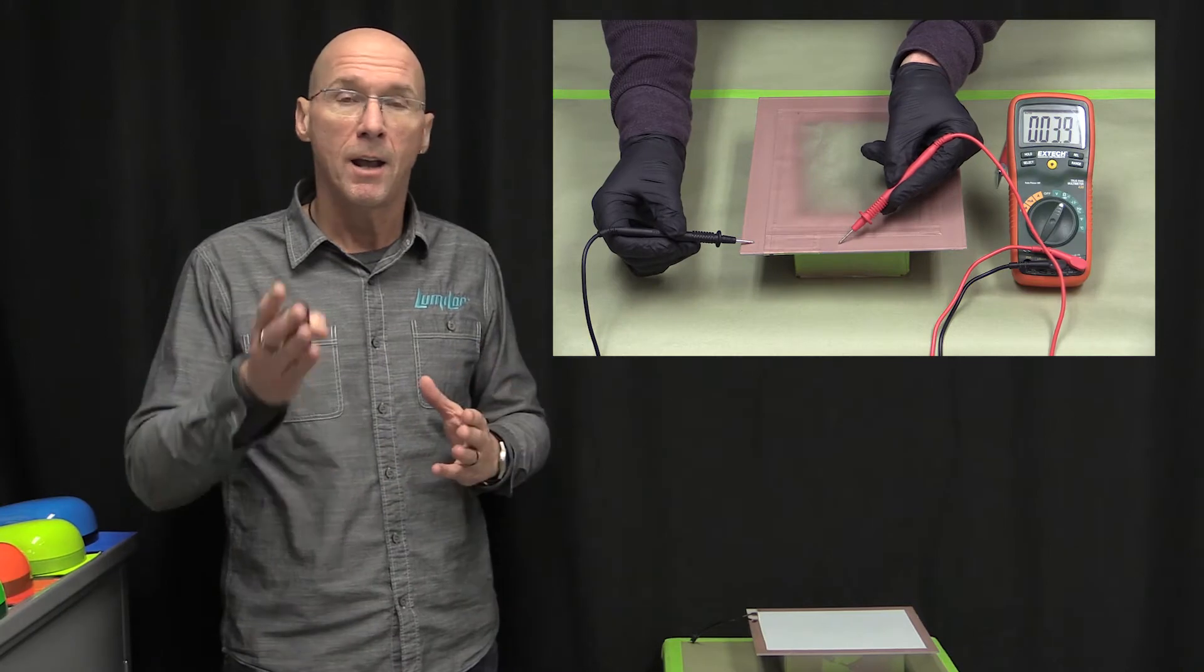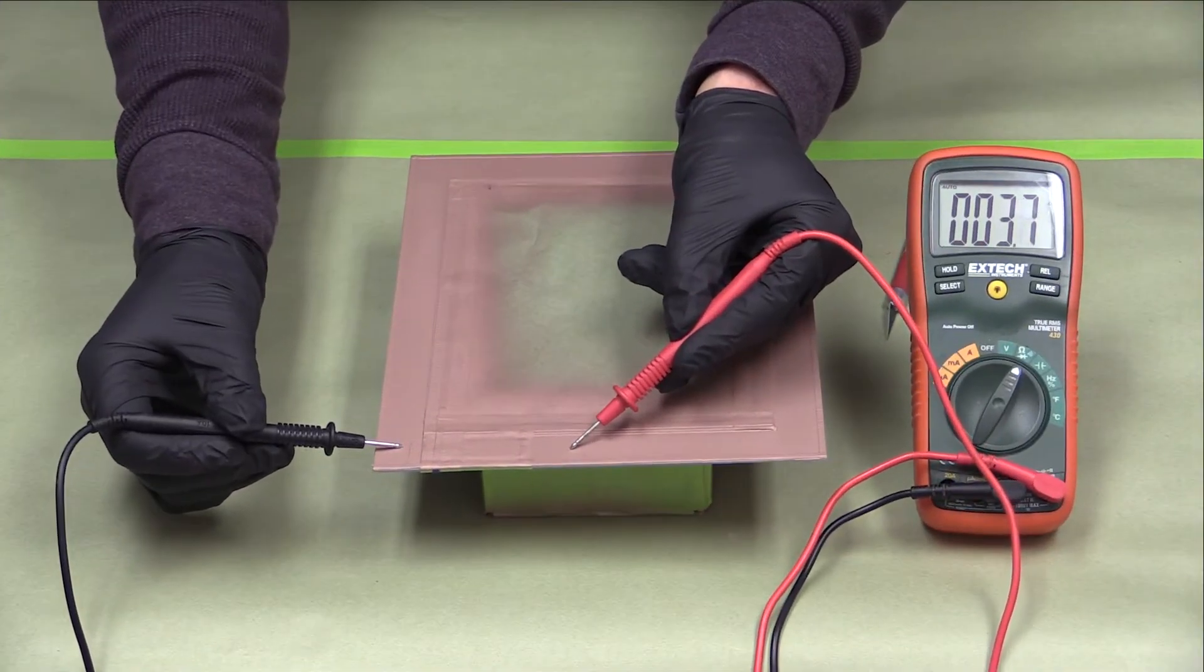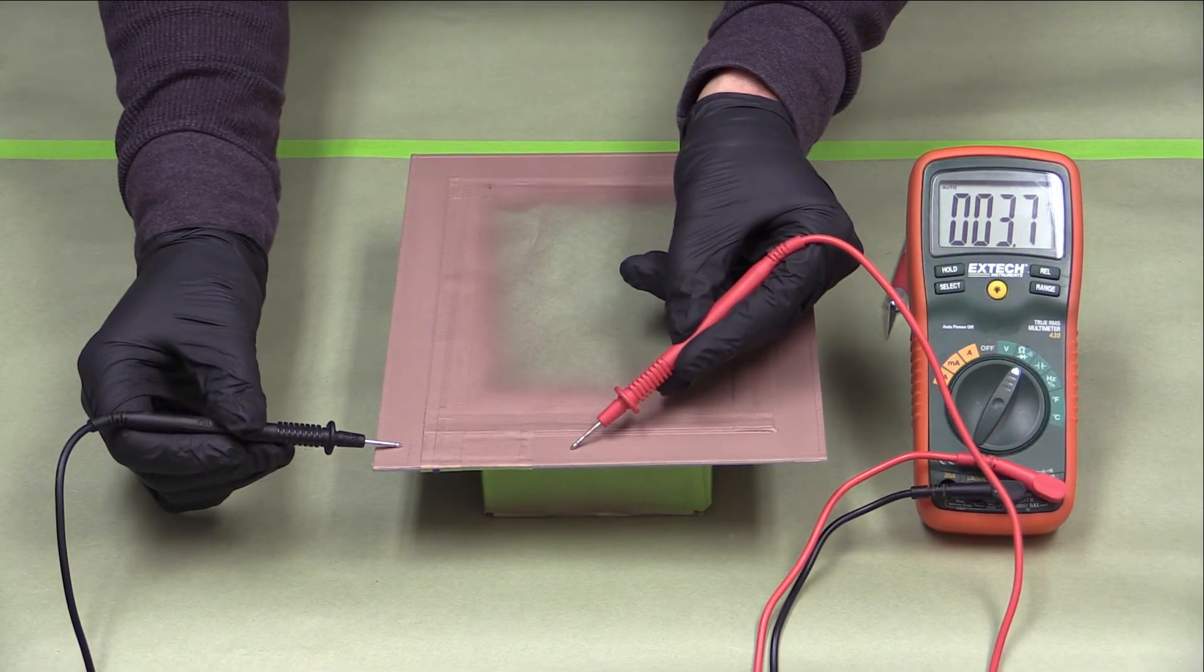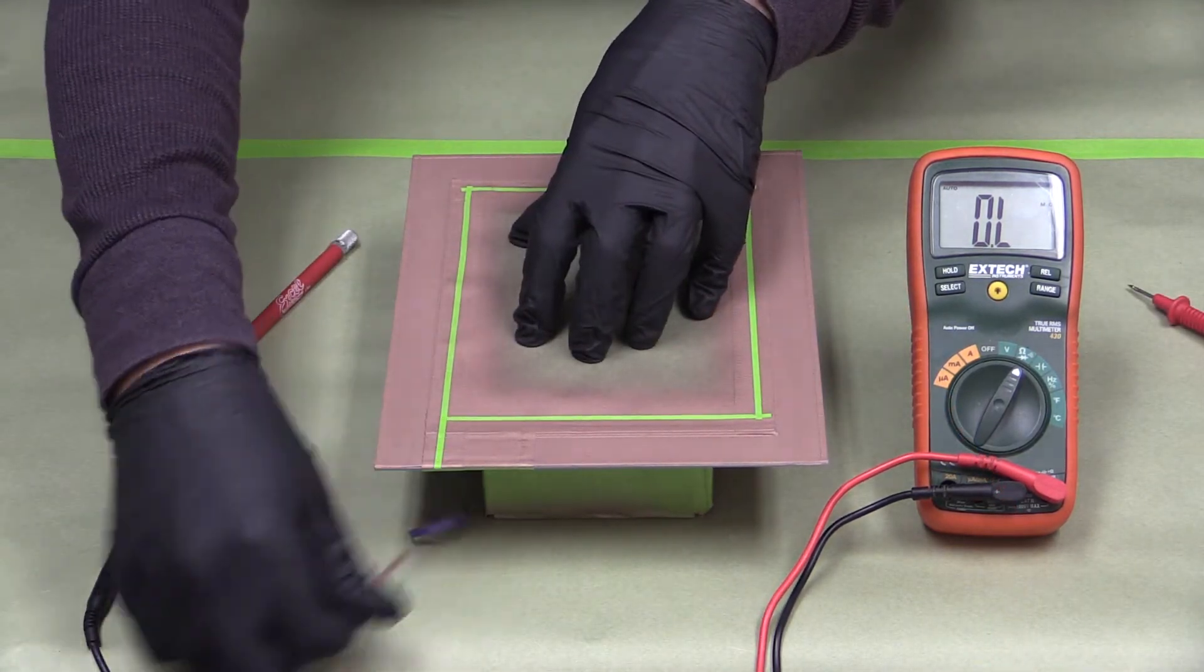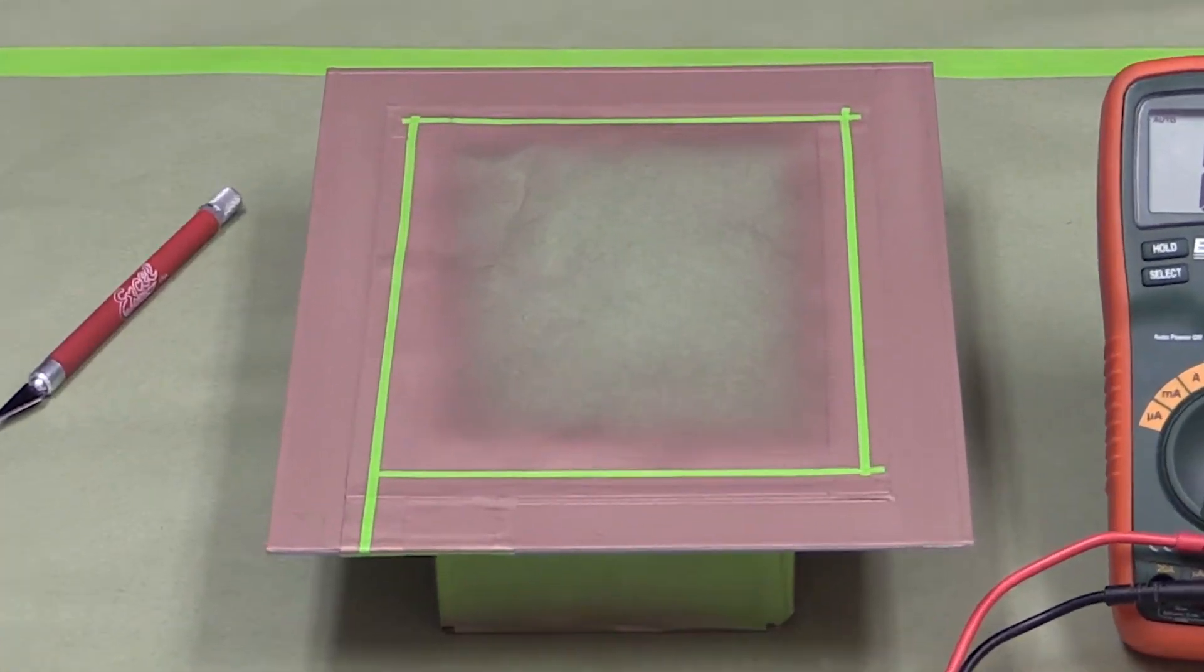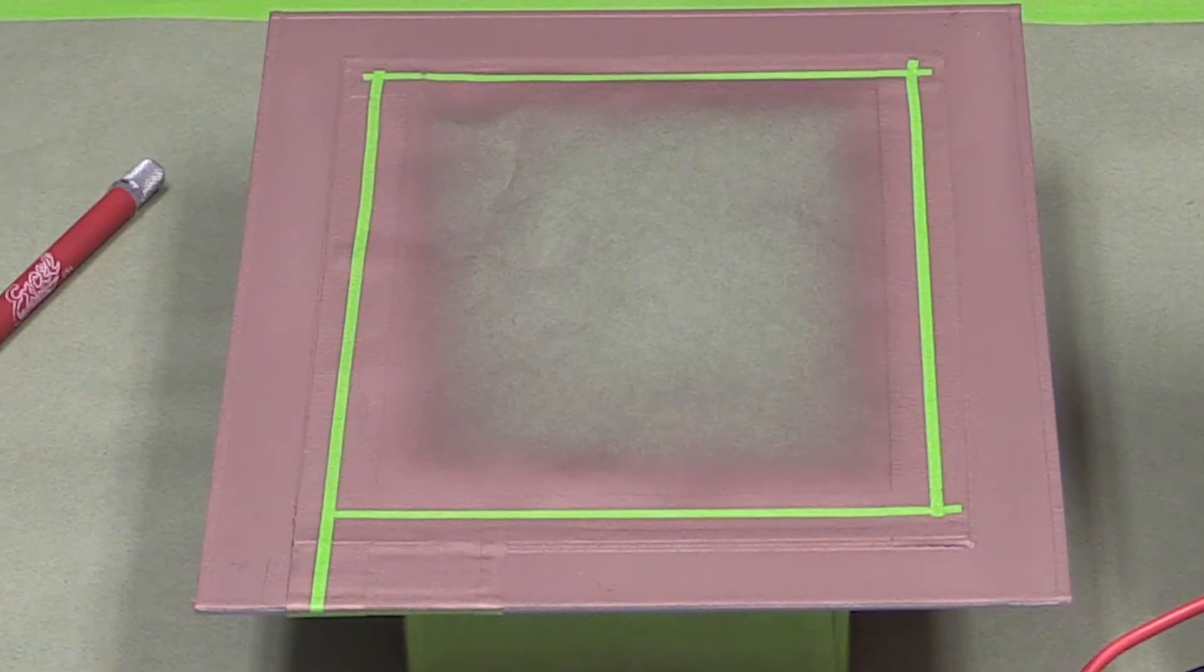Let it dry, and then check your resistance with the multimeter. Once it reads the proper number, remove the tape along the edge of the bus bar area. This will disconnect the overspray from the actual bus bar area, and therefore give you a more accurate reading.